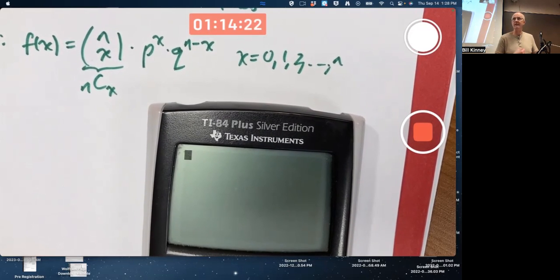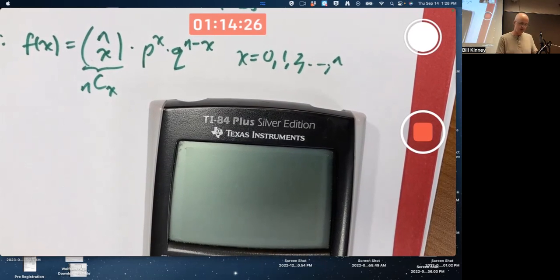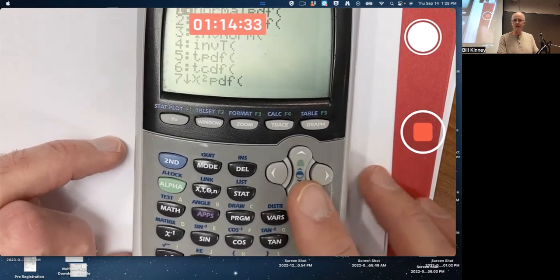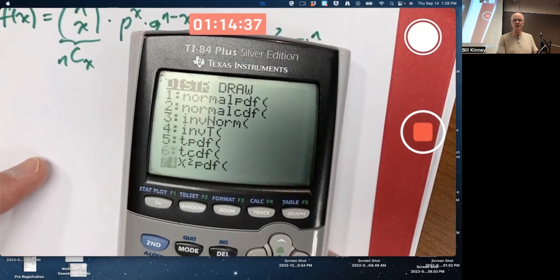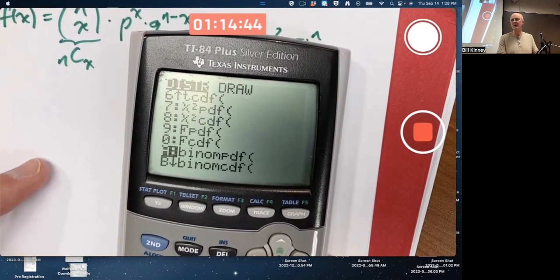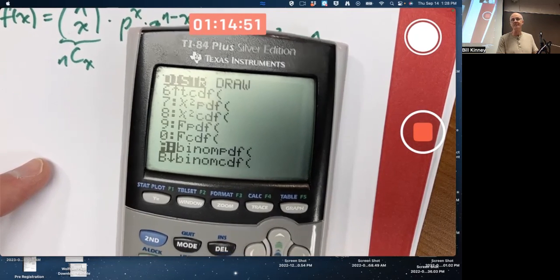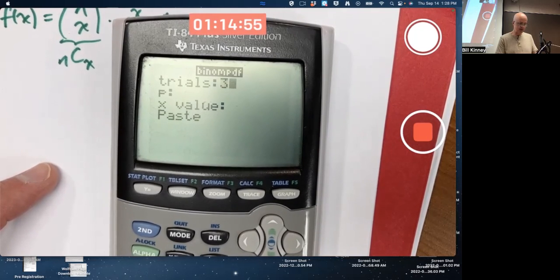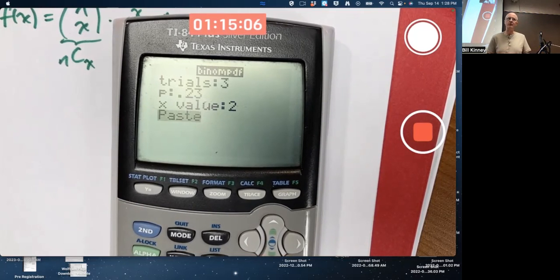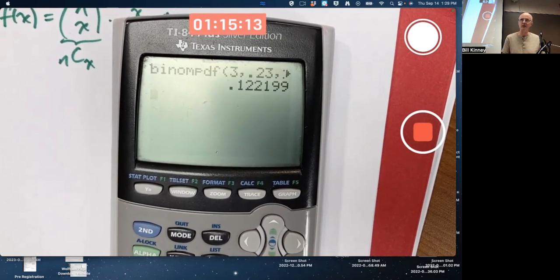If, for example, you want to find the probability of getting two hits in three at bats if your average is .230, you can go to the distribution menu - second distribution menu - scroll down to binomial PDF. Now I'd call that a binomial PMF, but the calculator, okay, we'll call it a PDF. Number of trials, three. Probability of success, 0.23. Number of successes, two. What's the chance that a .230 baseball player will go two for three? It's fairly small - 0.122199. Yes, that looks familiar from Tuesday.